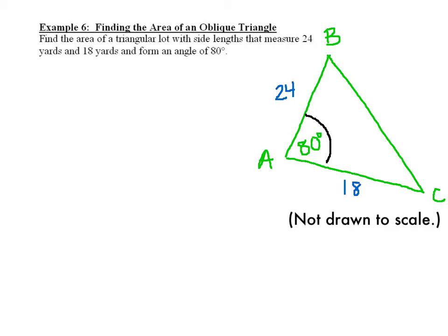For example 6, here we're going to get away from our law of sines a little bit, but you can use the law of sines to actually figure out your area of this oblique triangle.